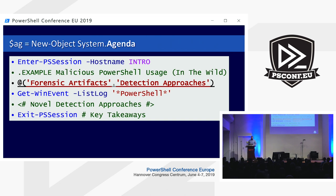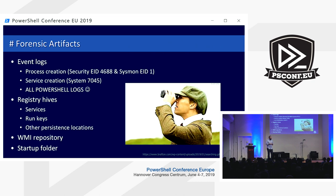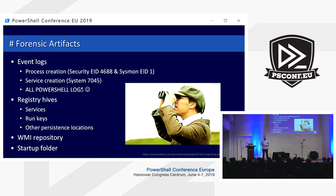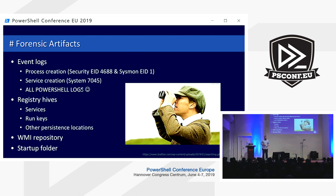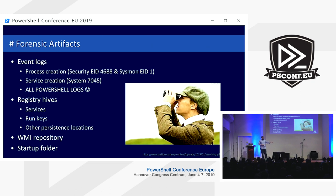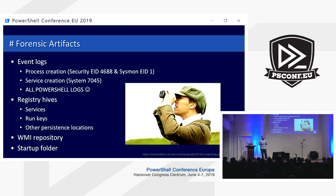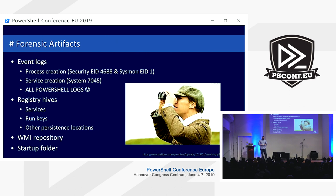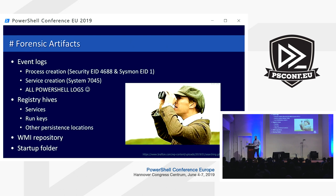Let's look at some forensic artifacts and detection approaches. When it comes to detecting malicious attacks in general — not just PowerShell — having process execution logs is critically important. Typically you get that from security event log 4688 or Sysmon EID 1. For service creation, that's system EID 7045. When it comes to PowerShell specifically, we should also be looking at all the insane logging PowerShell has at our disposal. Other places to look: registry keys for common persistence locations, WMI repositories, startup folders on disk.